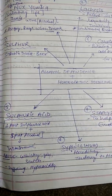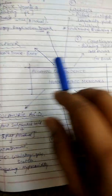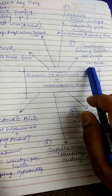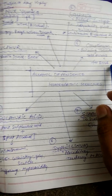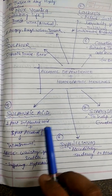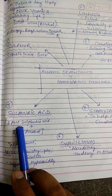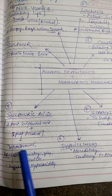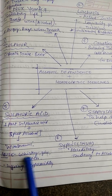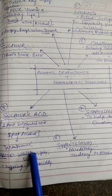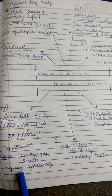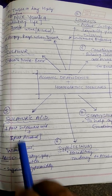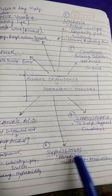Third one is Sulfur — strong desire for beer. Fourth one is Causticum — burning thirst for cold drinks and for beers. Then Sulfuric Acid: one part of sulfuric acid plus three parts of alcohol — agar yeh combination diya jaye, withdrawal mein kaafi effective hota hai. Indicated for abuse of whiskey, gin, scotch, and patients suffering from hyperacidity.